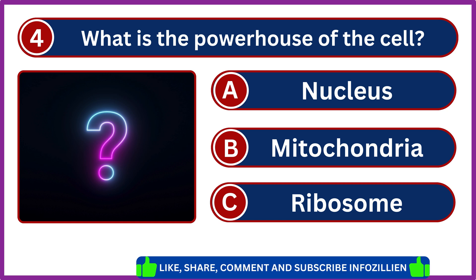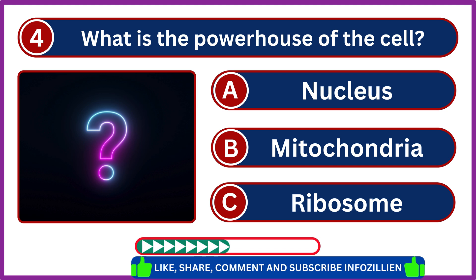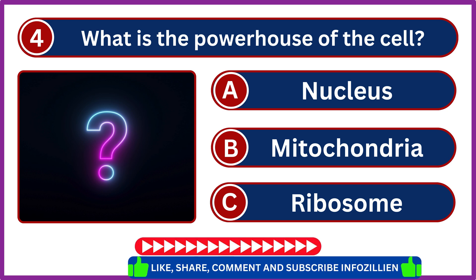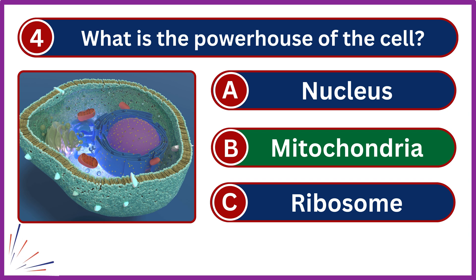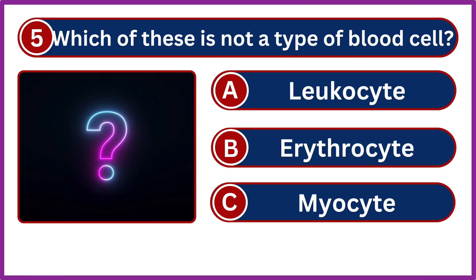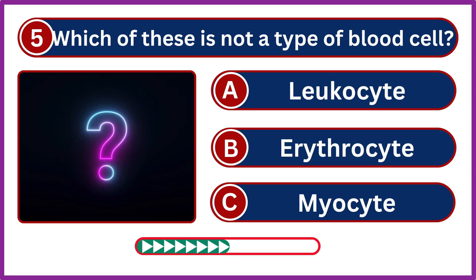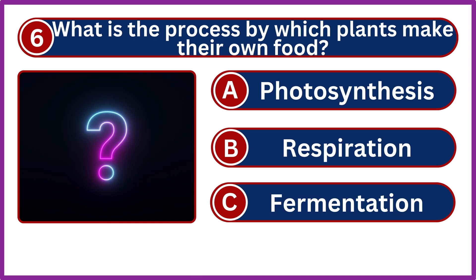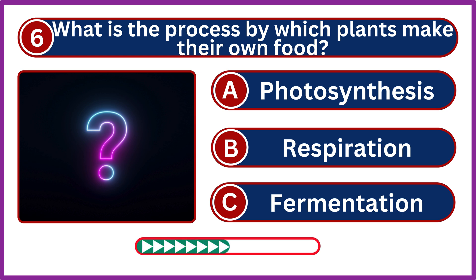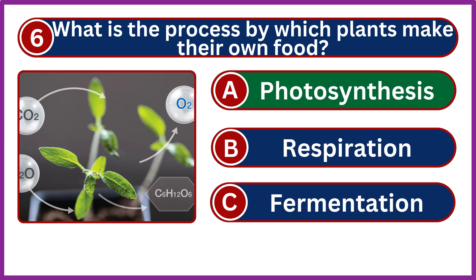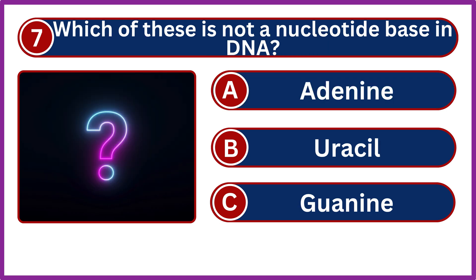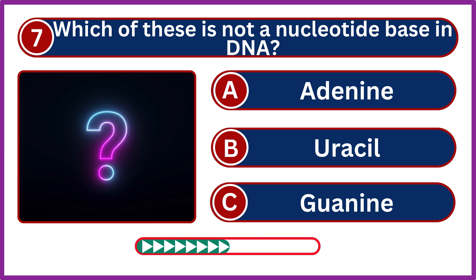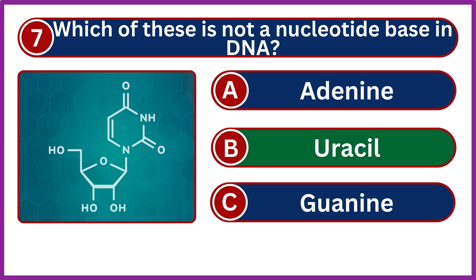What is the powerhouse of the cell? Mitochondria. Which of these is not a type of blood cell? Myosite. What is the process by which plants make their own food? Photosynthesis. Which of these is not a nucleotide base in DNA? Uracil.